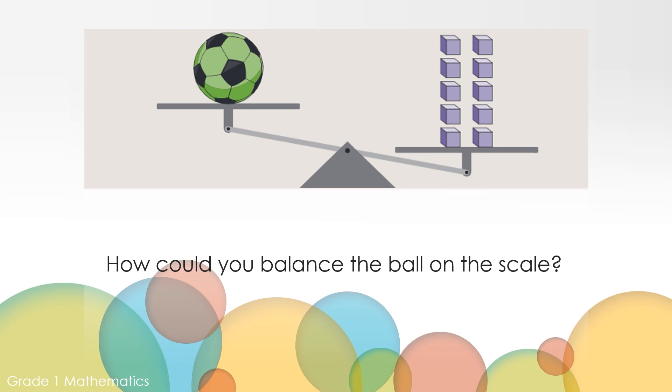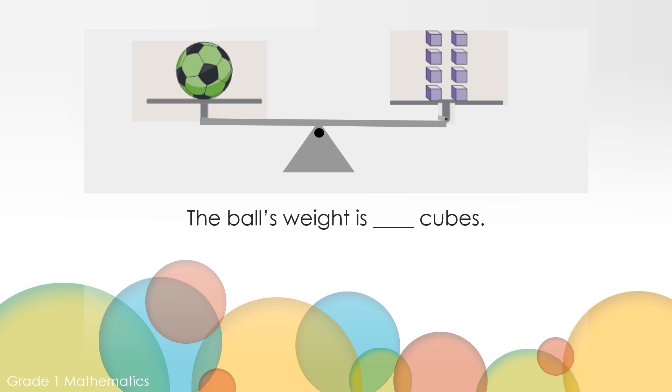How could you balance the ball on the scale with the cubes? Would you add more cubes or take some cubes away? Mathematicians share their thinking with others. So practice being a good mathematician by saying your ideas out loud either to yourself or someone nearby. In order for us to balance the ball and the scale, we would need to take some cubes away. Now that we've taken some cubes off the scale, we can see that the ball and the cubes have the same weight. Now let's figure out the weight of the ball. Take a moment on your paper, finish the sentence to make it true. The ball's weight is eight cubes. Did you see that?